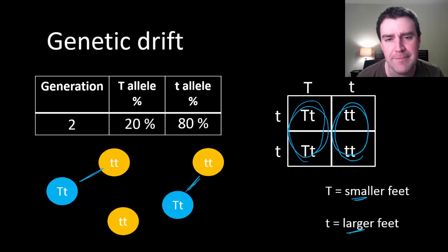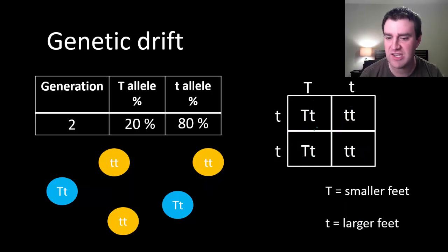But that might not happen, right? Each one of these boxes represents a possibility for each of the offspring they reproduce. What if there was just a possibility that both couples produced maybe three offspring and they all just happen to have larger feet?